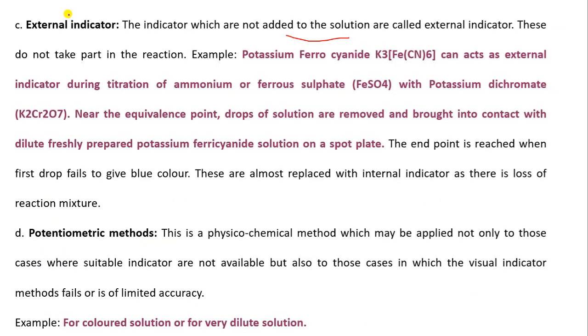Now the external indicator. The indicators which are not added to the solution are called external indicators. These do not take part in the reaction. For example, potassium ferrocyanide K3[Fe(CN)6] can act as an external indicator during titration of ammonium or ferrous sulphate FeSO4 with potassium dichromate K2Cr2O7.